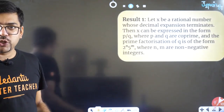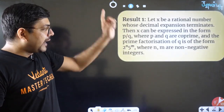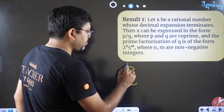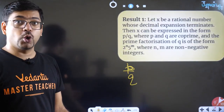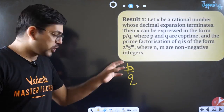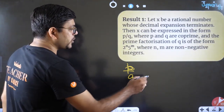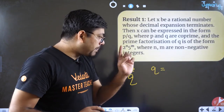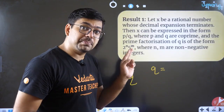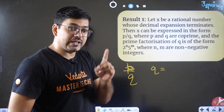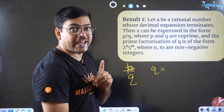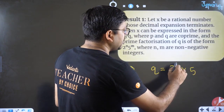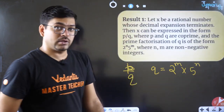Any number expressed in the form p by q should first be reduced to simplest form — no further common factor. Once you have that, your objective is to check q: find the prime factorization of q. Then check whether that prime factorization has only powers of 2 and powers of 5, or whether any other numbers appear.